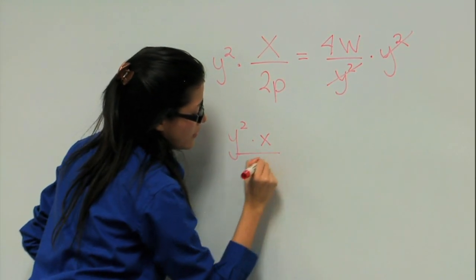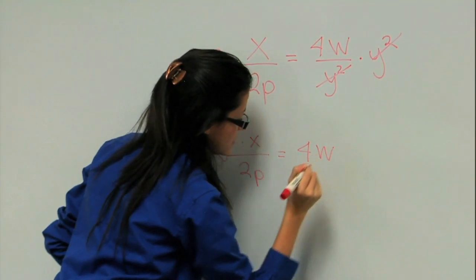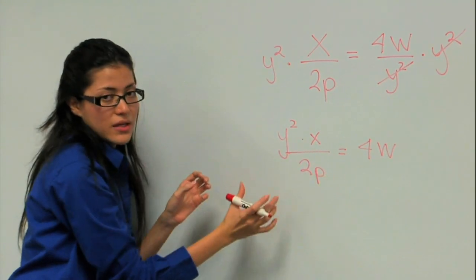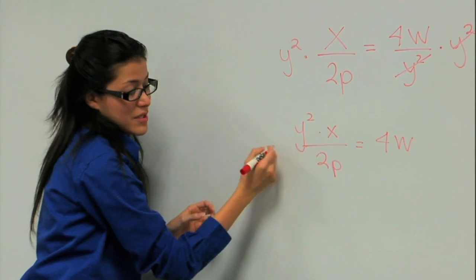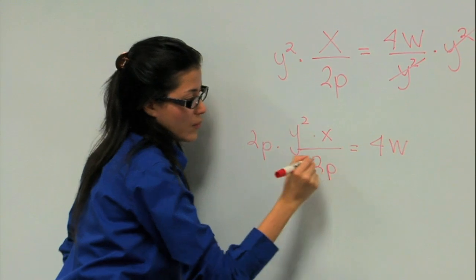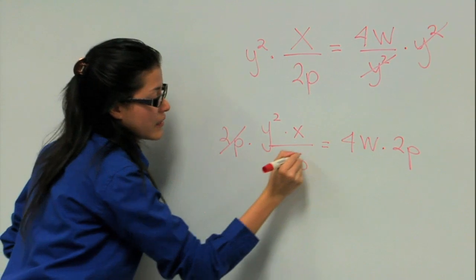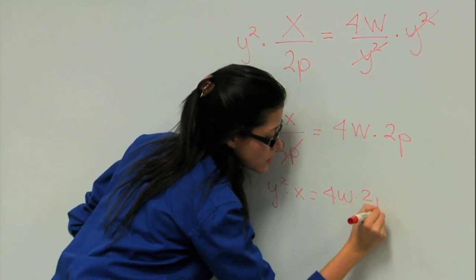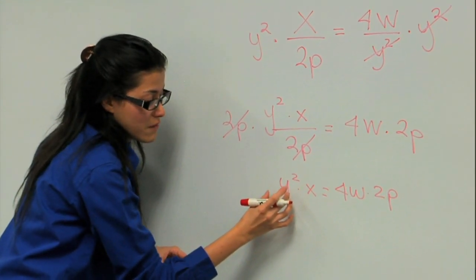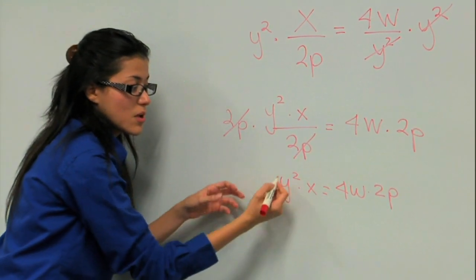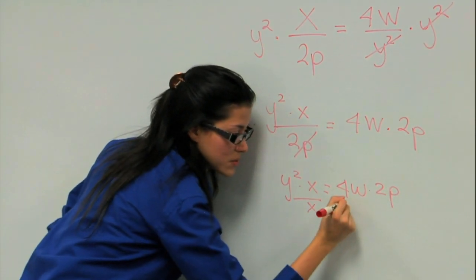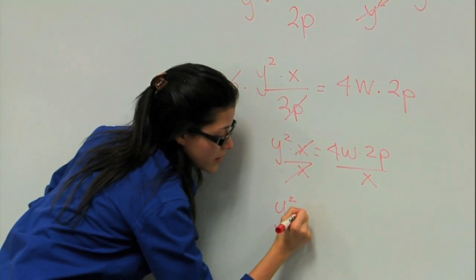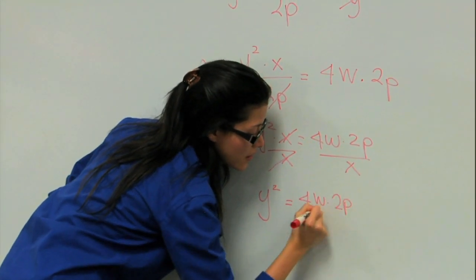y squared times x over 2p equals 4w. So here we have x and 2p. How do we get rid of the 2p so that we can have the y squared by itself? We multiply by 2p on both sides — that way we can cancel it from here. And now we have y squared times x equals 4w times 2p. But we still don't have y by itself. Since x is multiplying, we have to divide by x on both sides. That way we cancel it from here. Rewriting this, we have y squared equals 4w times 2p over x.